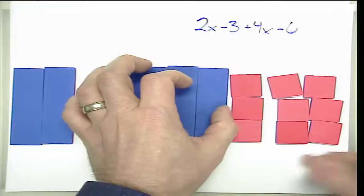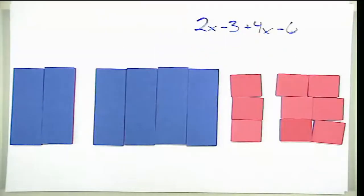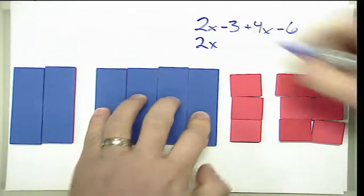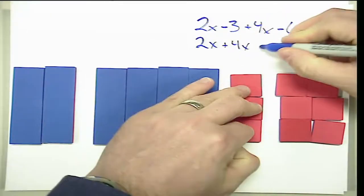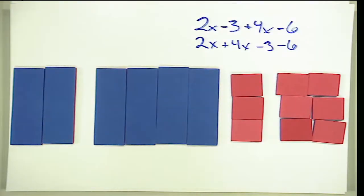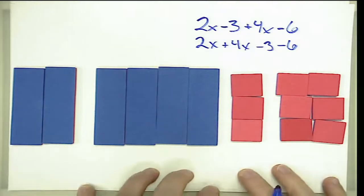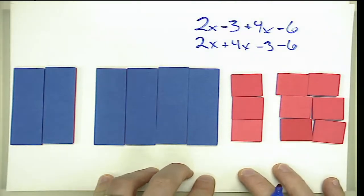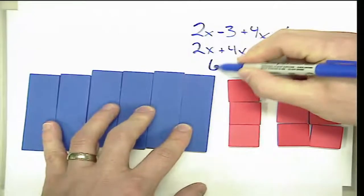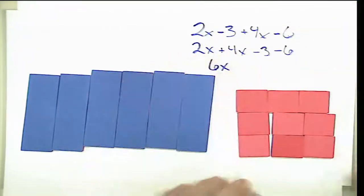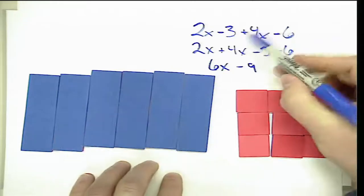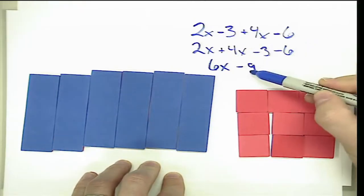By moving our sets of pieces we can reorder the expression and interpret it as a positive 2x, a positive 4x, a negative 3, and a negative 6. The sign travels with each term, reinforcing that skill for students. When we combine like terms, positives added to positives give more positives — in this case a positive 6x — and negatives added to negatives give more negatives, in this case a negative 9.